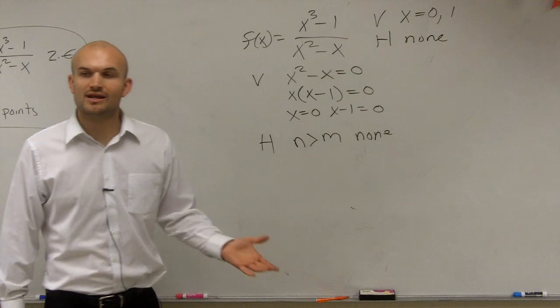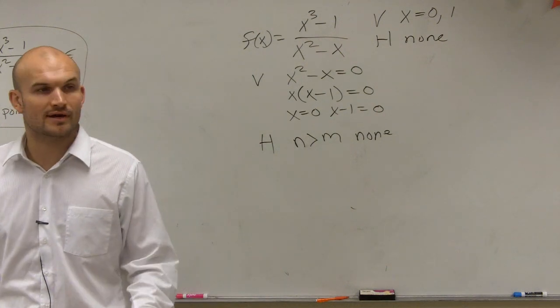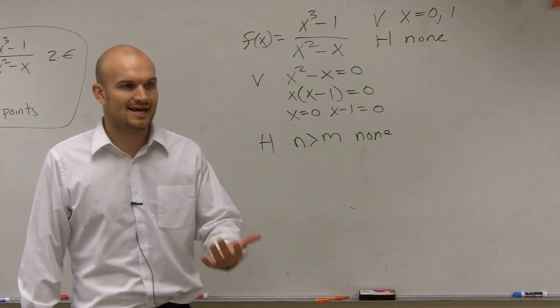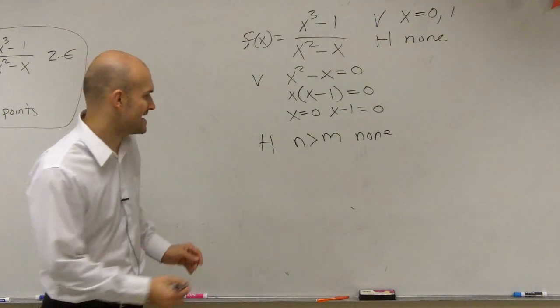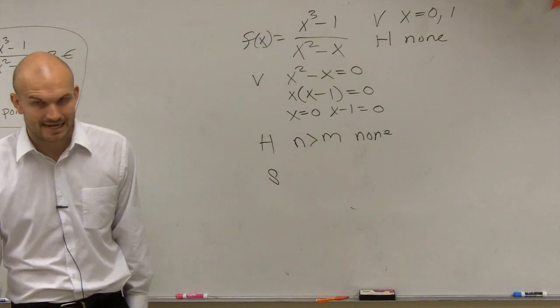OK. So now when we don't have a horizontal asymptote, well, that now creates an opportunity for us to find an oblique or slant asymptote. So how do we find that?